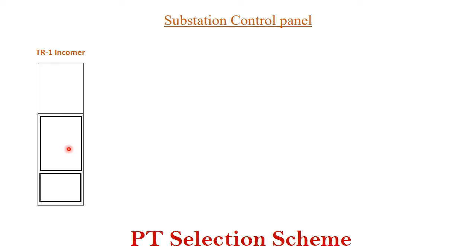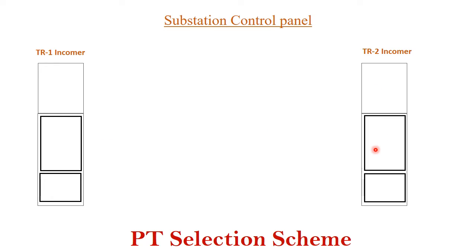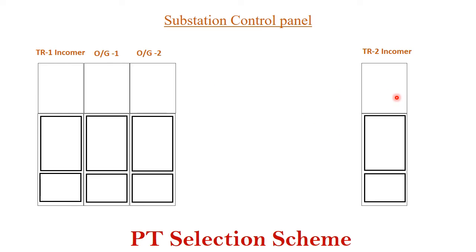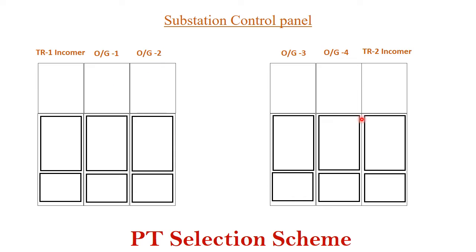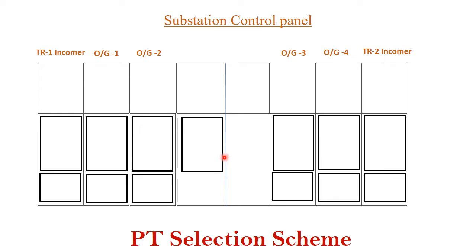This is the incoming panel for transformer one, and this is the incoming panel for transformer two. Then we have various number of outgoing panels that are connected to this incoming respectively. This is section A and this is section B. There is a provision for connecting these two sections through a bus coupler. The bus coupler panel has basically two sections — the bus coupler itself and the adapter.